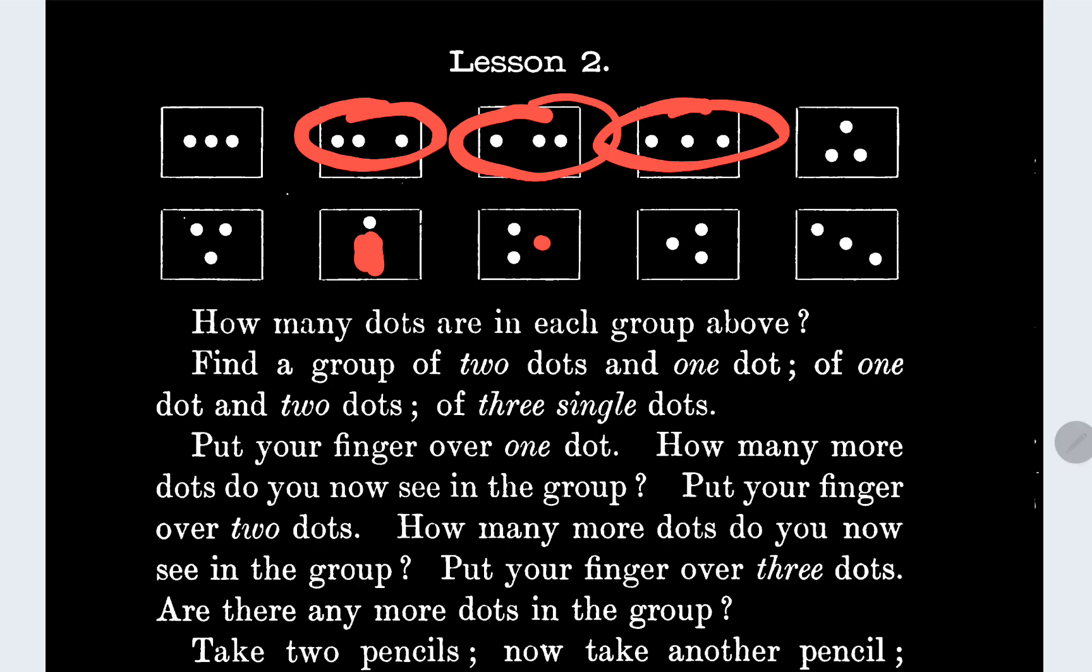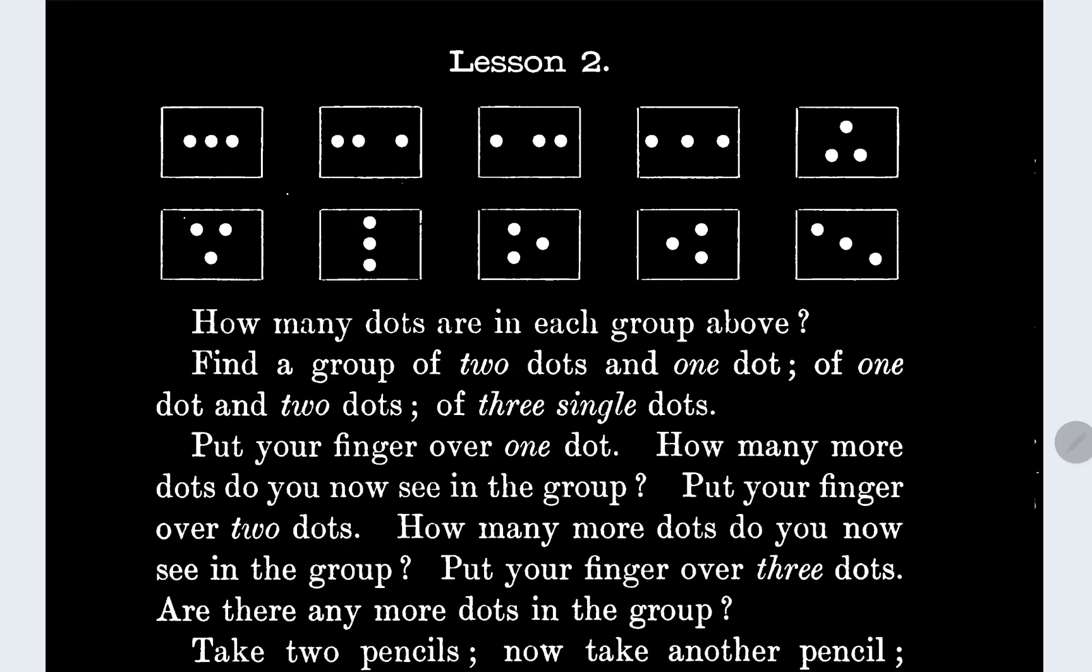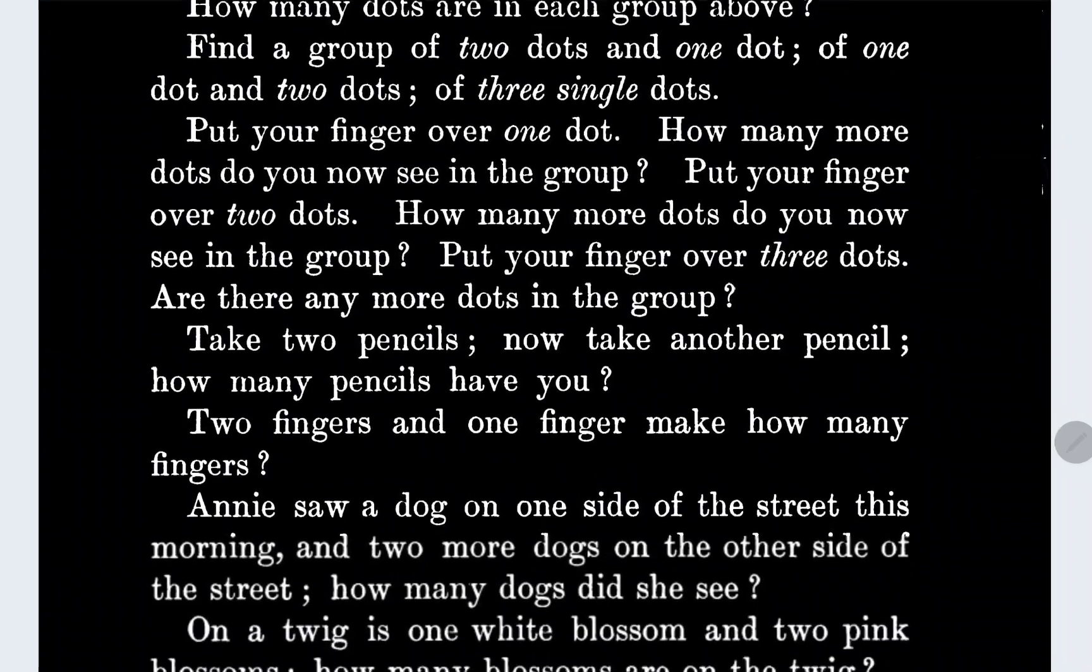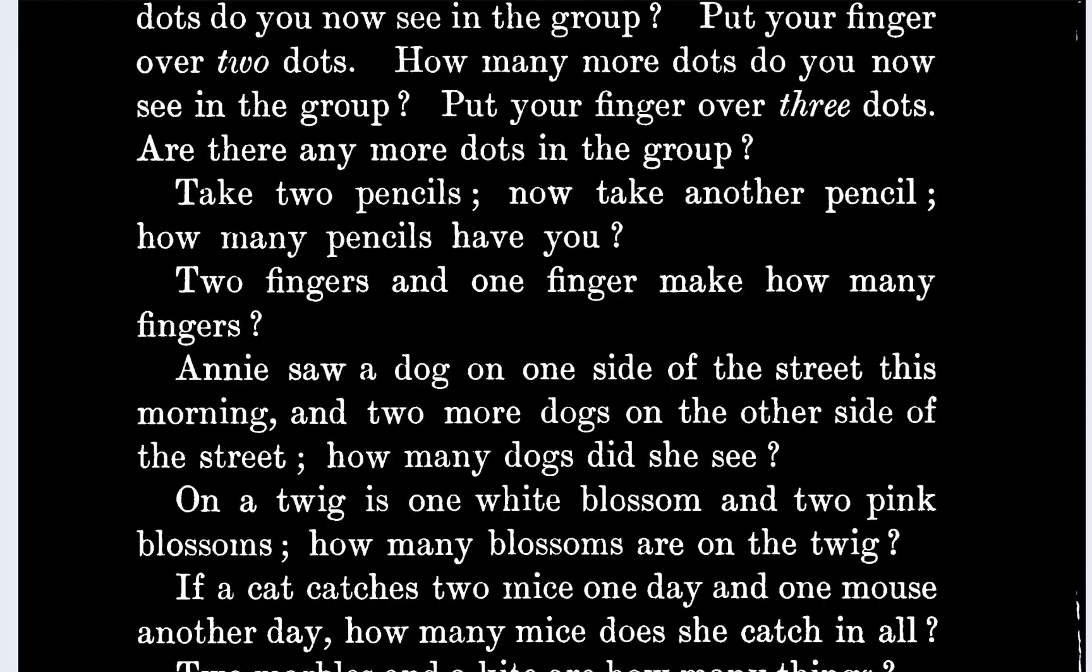Okay, so the next one says put your finger over three dots. Are there any more dots in the group? So if we put our finger over these, no, there are no dots in the group. Okay, now we're gonna clear this.